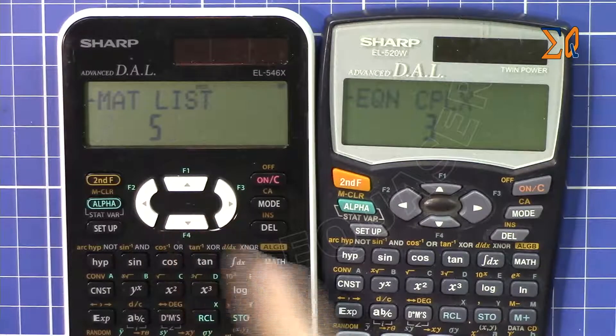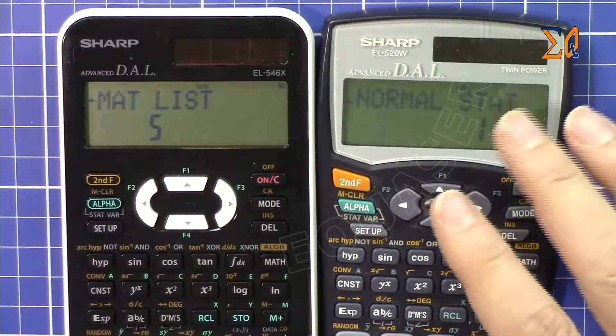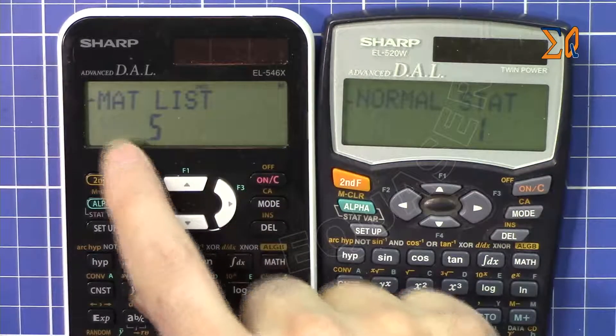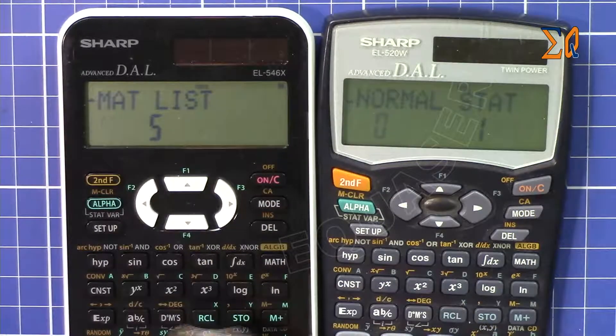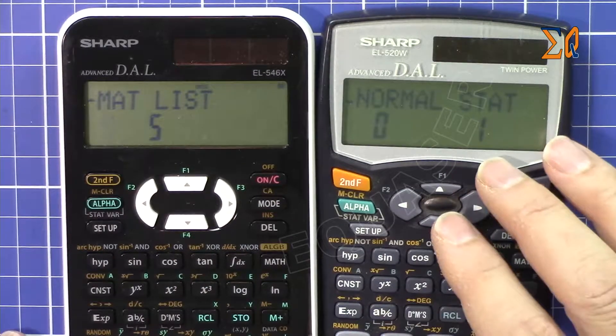Now the difference comes here. This can do statistics, this can also do statistics, but here we have matrix math. This cannot do the matrix. So the only difference between the two is the matrix.